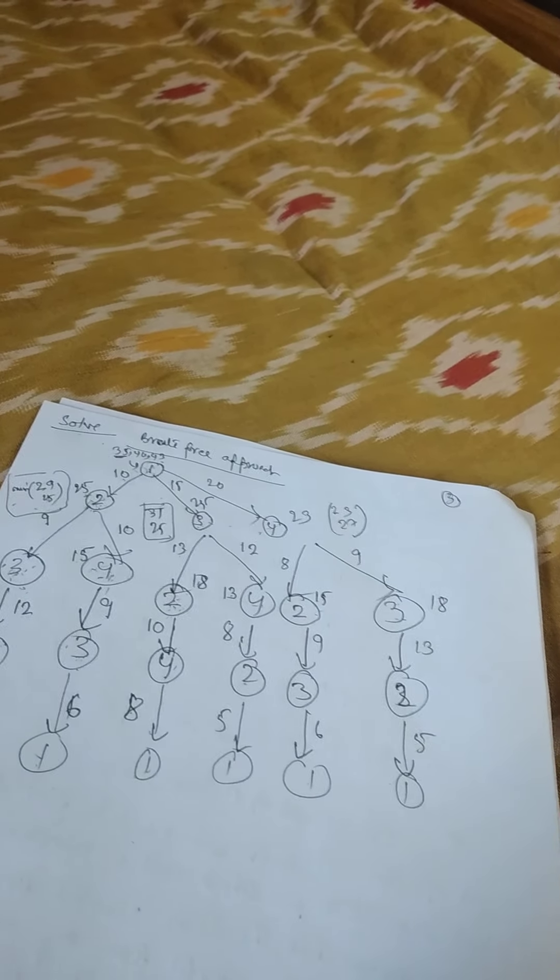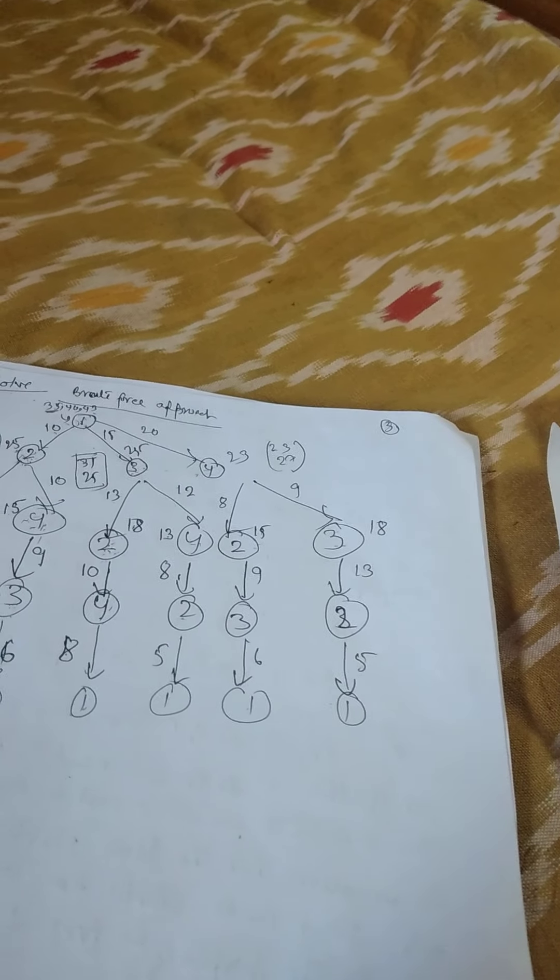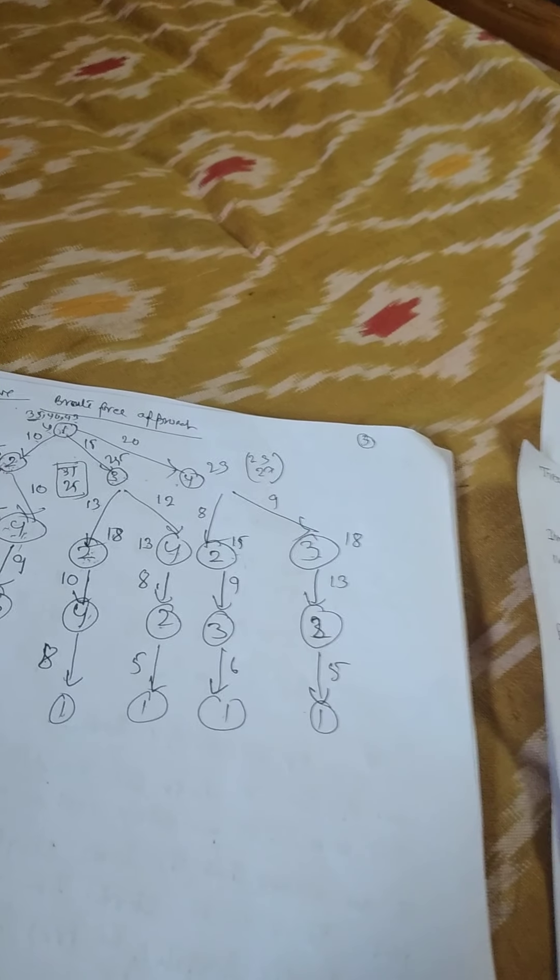We are going to solve this problem using brute force — we try all possible combinations and find the minimum cost tour. One important thing to note: in this example we assume the tour starts from a fixed city, which is city 1. However, in the original TSP definition, no such constraint is given — the tour can start from any one of the cities: 1, 2, 3, or 4.